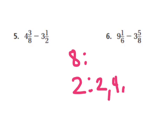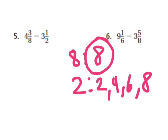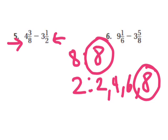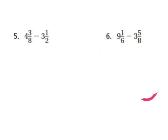The multiples of two are two, four, six, eight — and eight is also a multiple of eight. These two denominators have eight in common, so the denominators need to be eight. In order to subtract them, they have to have the same denominator. My least common denominator is eight, so now I need to change these denominators to eight.